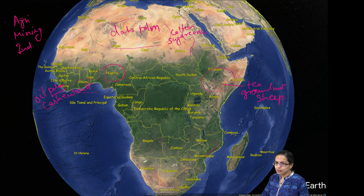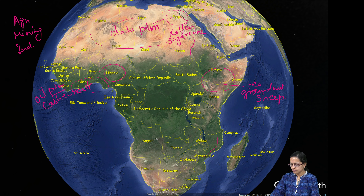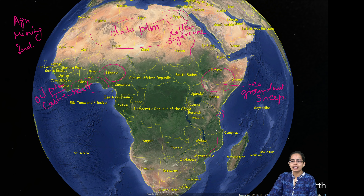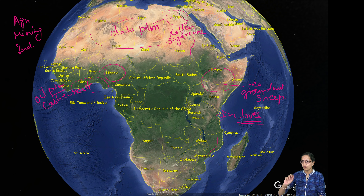The best quality date palms are seen from the regions of Egypt. Then, as we discussed in the last class, you have Pemba and Zanzibar Islands. These two islands are known for the best clove production and they are the leading producers of cloves in the world.